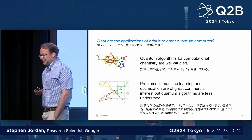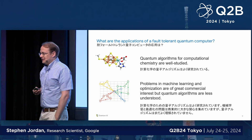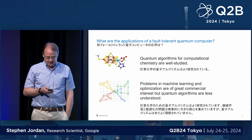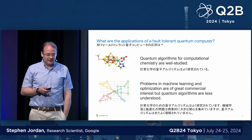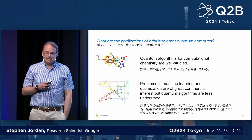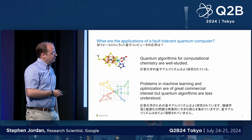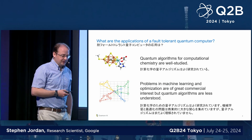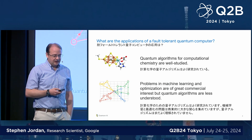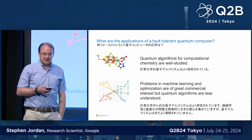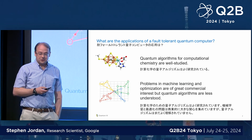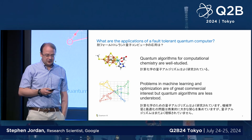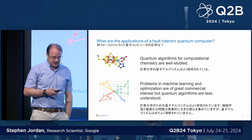However, as compared to the Hamiltonian simulation and computational chemistry examples, the capacity of quantum computers to help in machine learning and optimization is, I think it's fair to say, less well understood, even though much good research has been done in these areas.